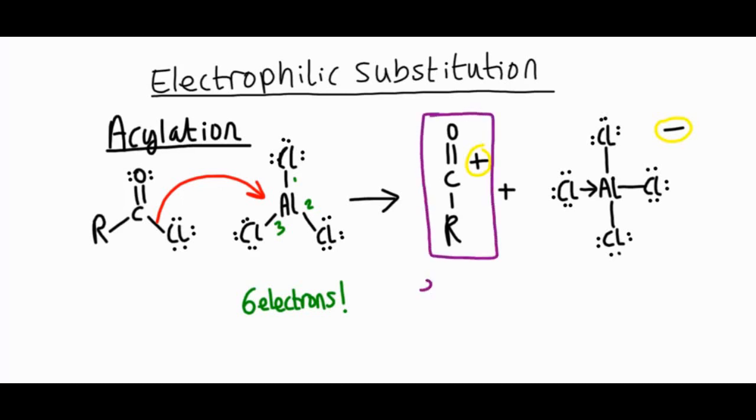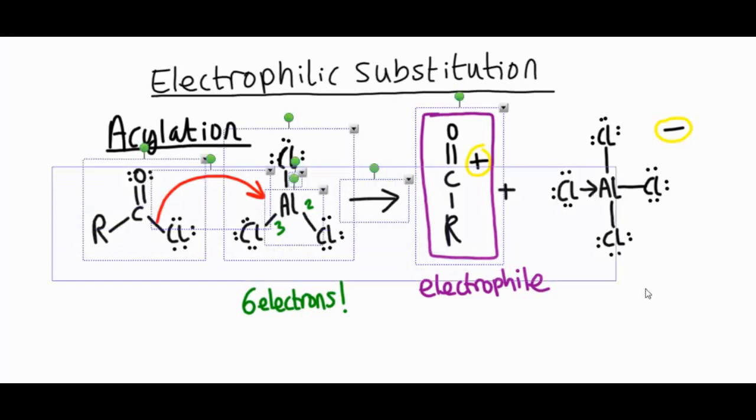So we've made our electrophile. It's this species. And that's a really good electrophile. And that will react directly with benzene adding into the ring and substituting hydrogen. So let's have a look at the mechanism.